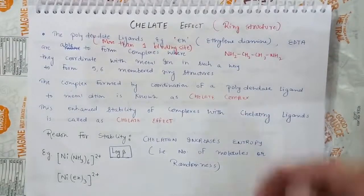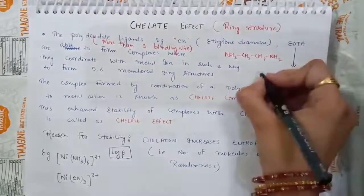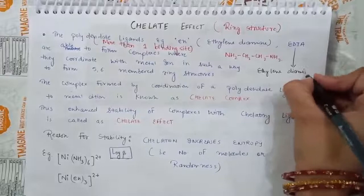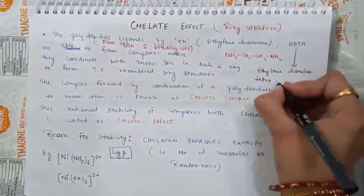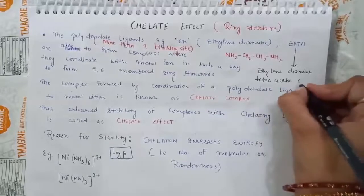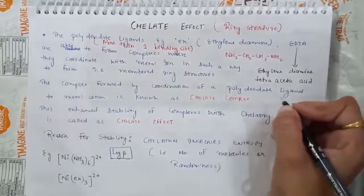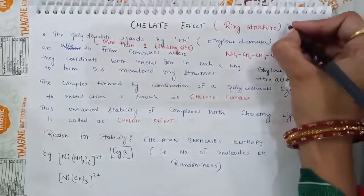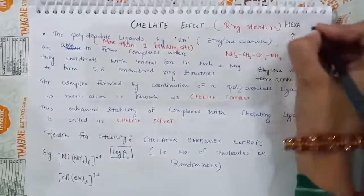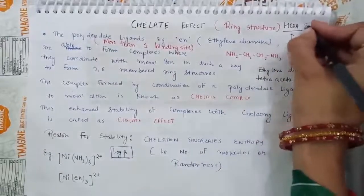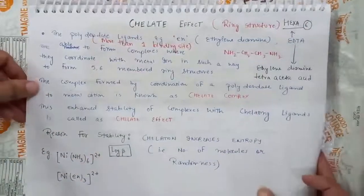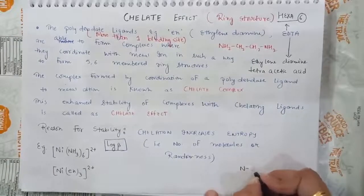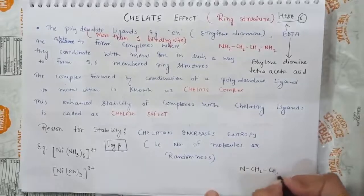In the case of EDTA — whose full form is ethylene diamine tetra acetic acid — this is a hexadentate ligand. It has 6 points of attachment.